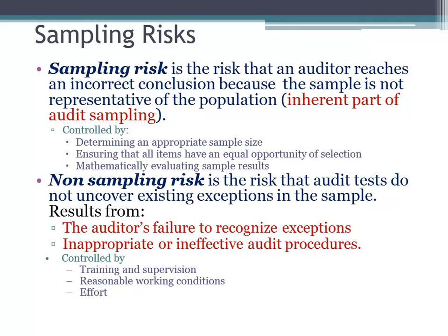Sampling risk is, by the nature of the audit, an inherent part of the audit. What we do to try to minimize that risk as auditors is we control it by determining what the appropriate sample size is, then ensure that all items have an equal opportunity of being selected, and then mathematically evaluate the sample results.